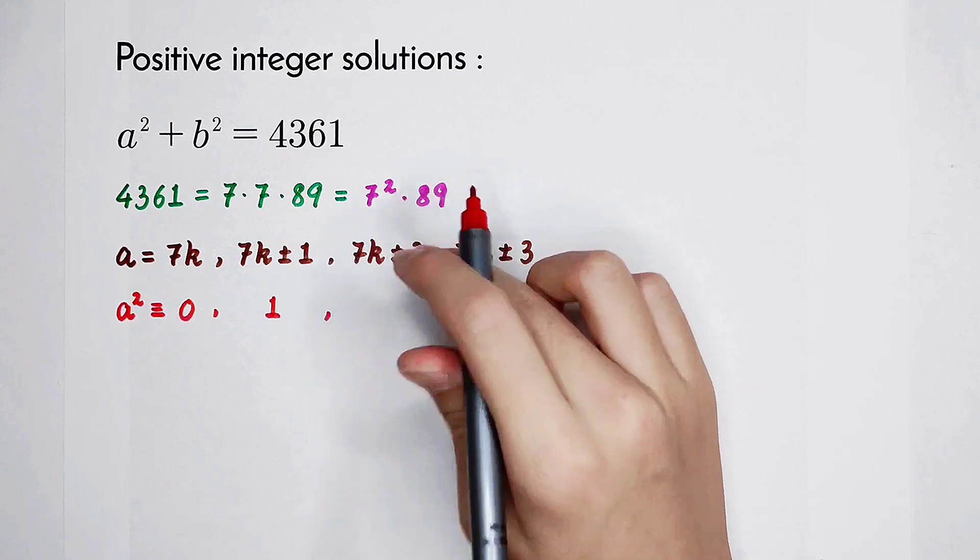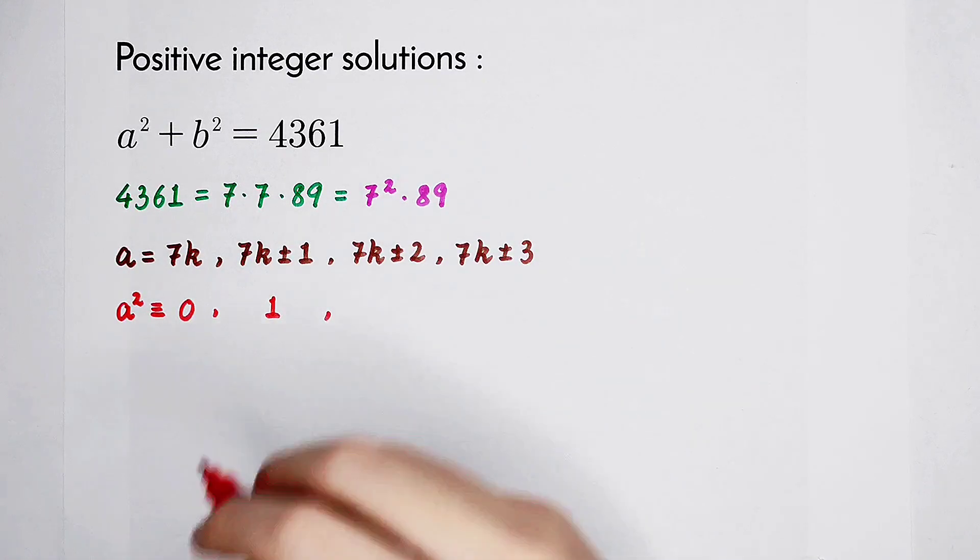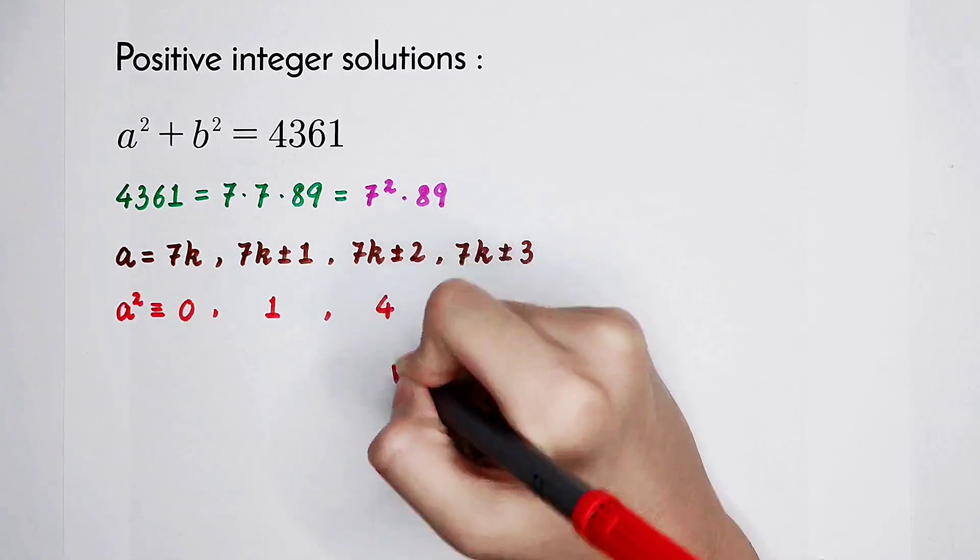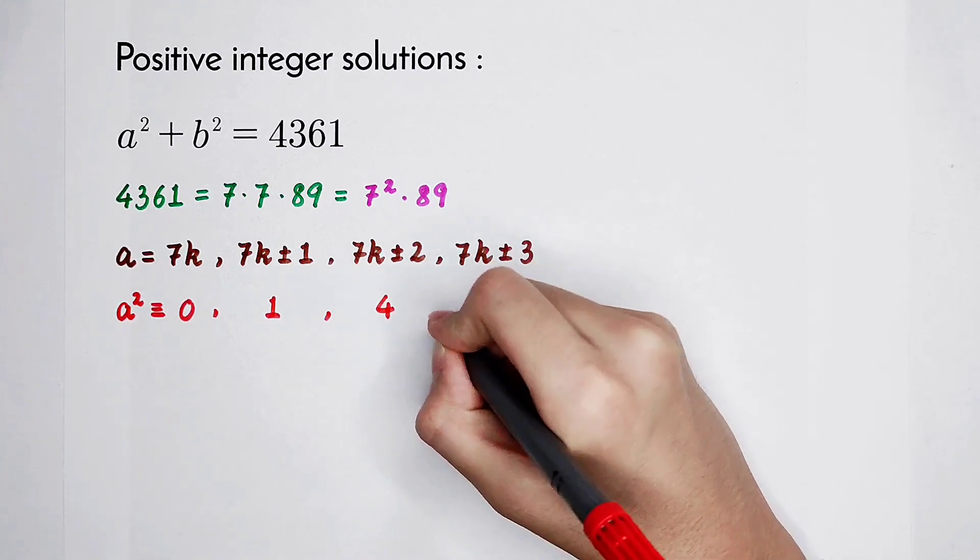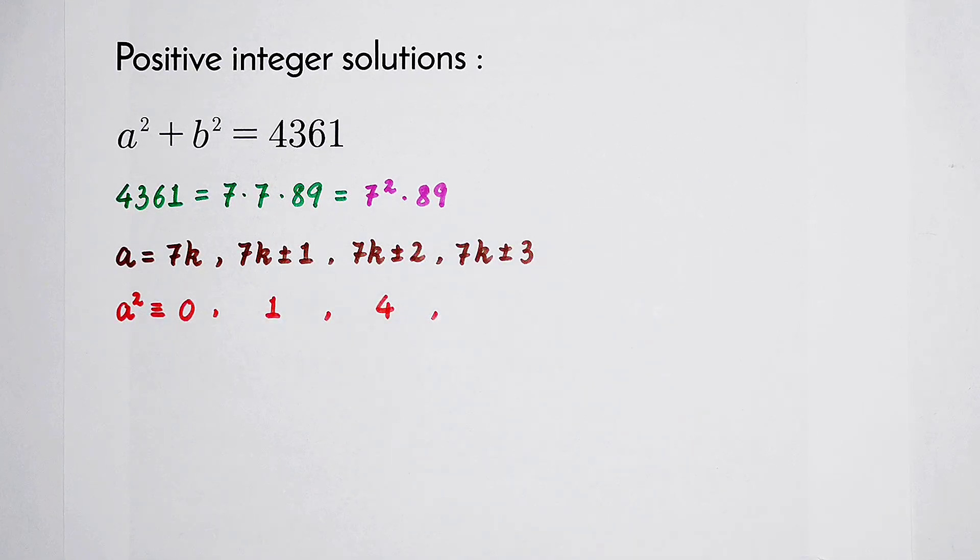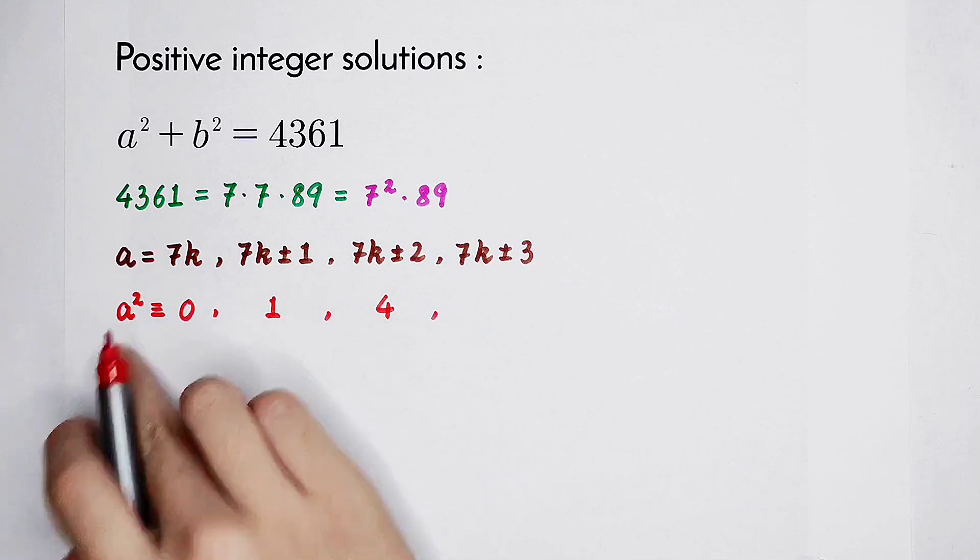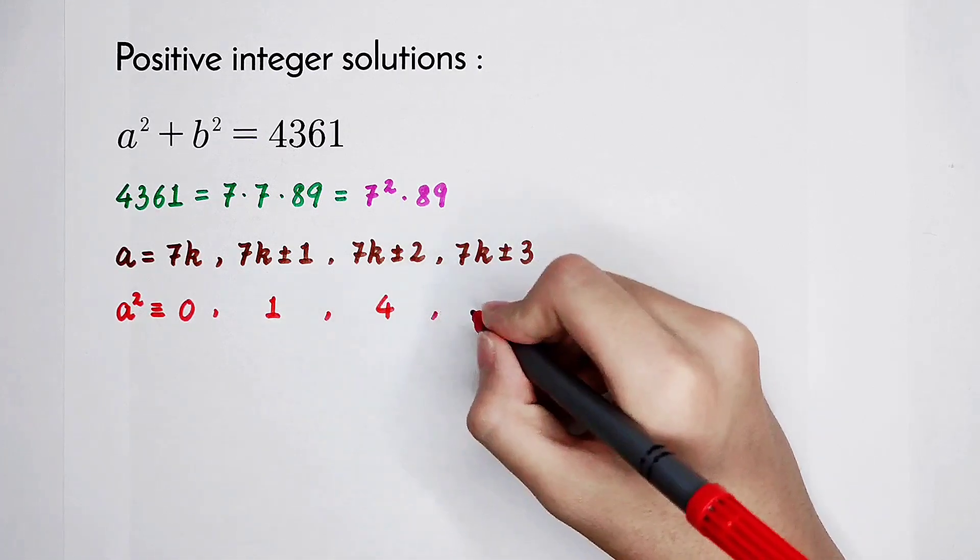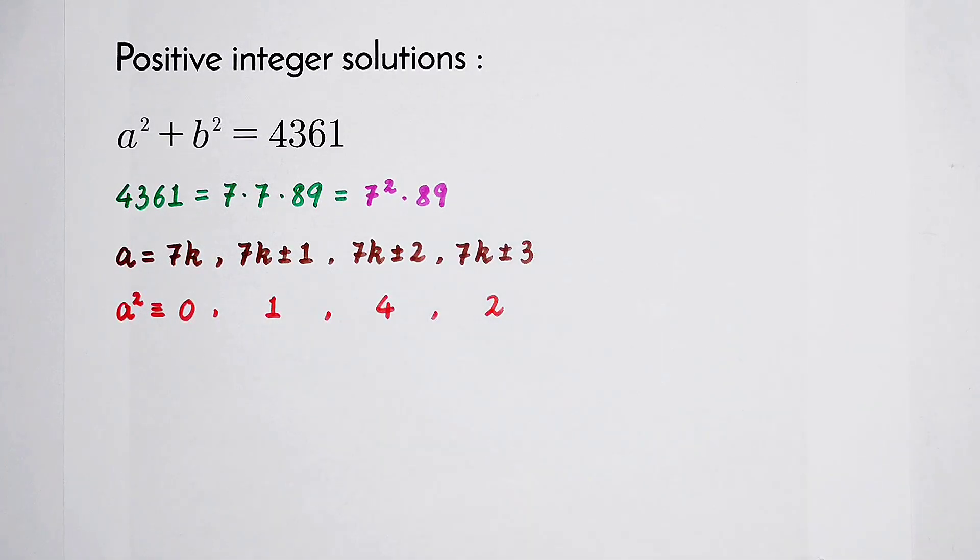If a is congruent to 2 or 5 mod 7, then a squared is congruent to 4 mod 7. If a is congruent to 3 or 4 mod 7, then a squared is congruent to 2 mod 7.